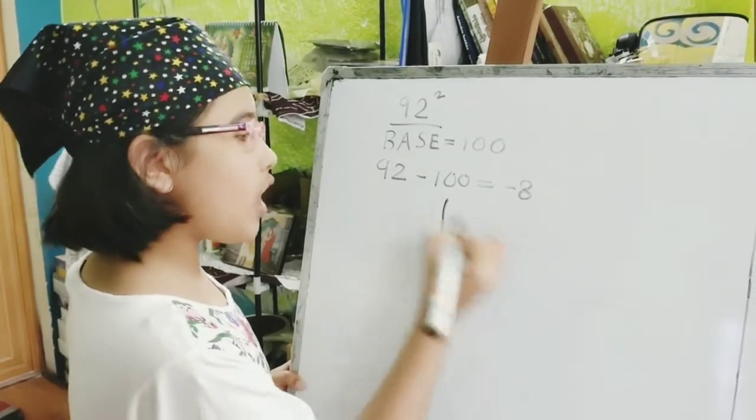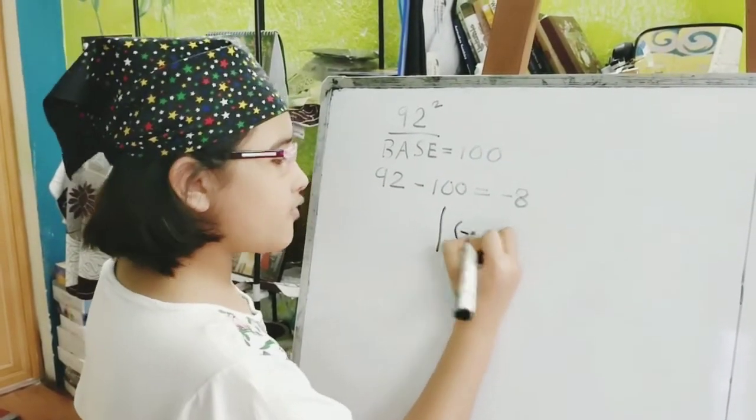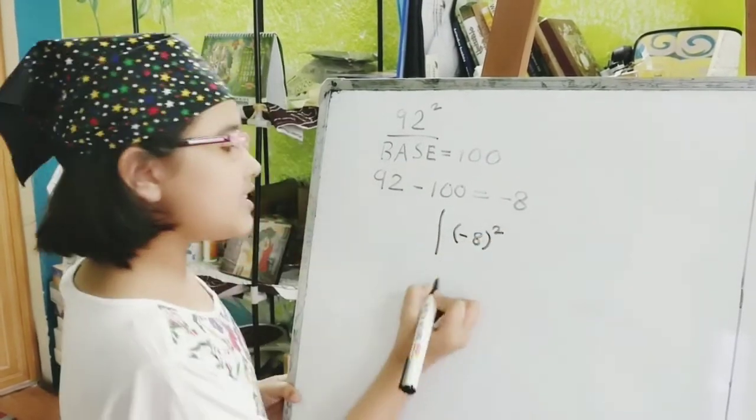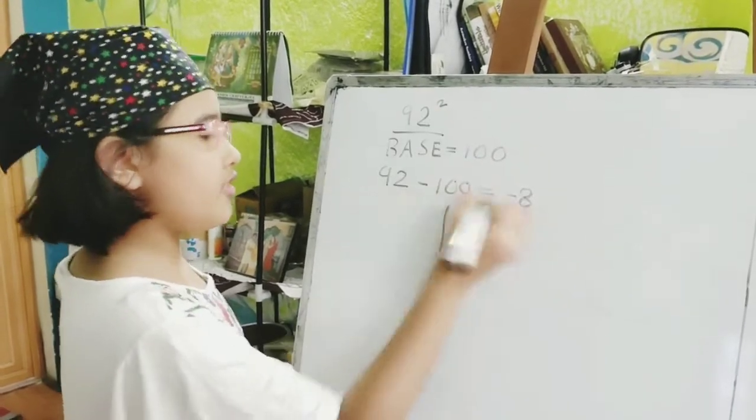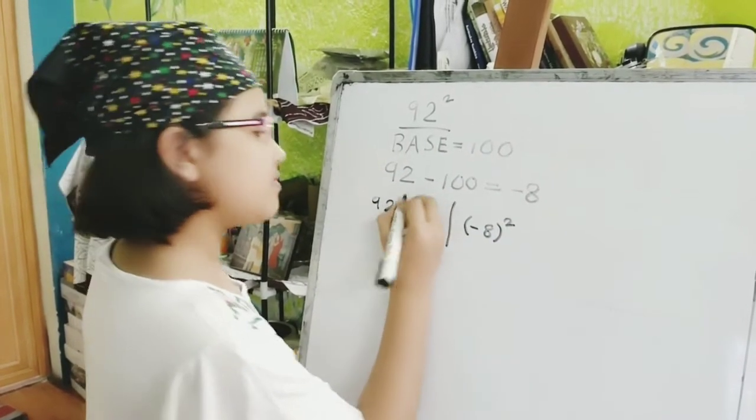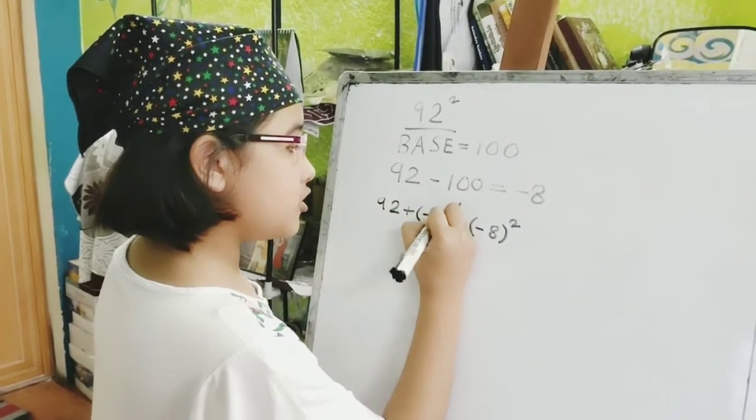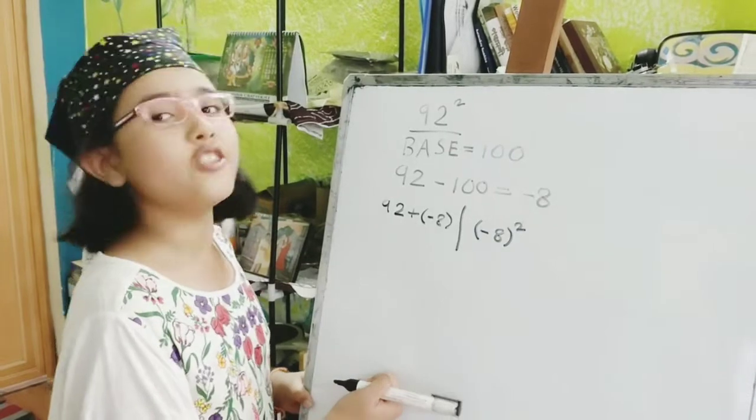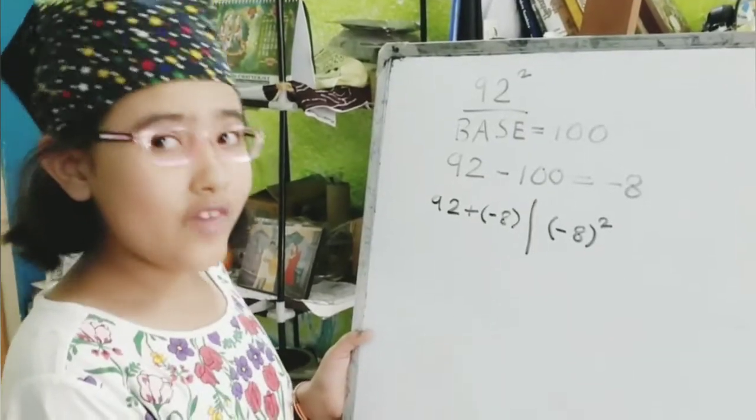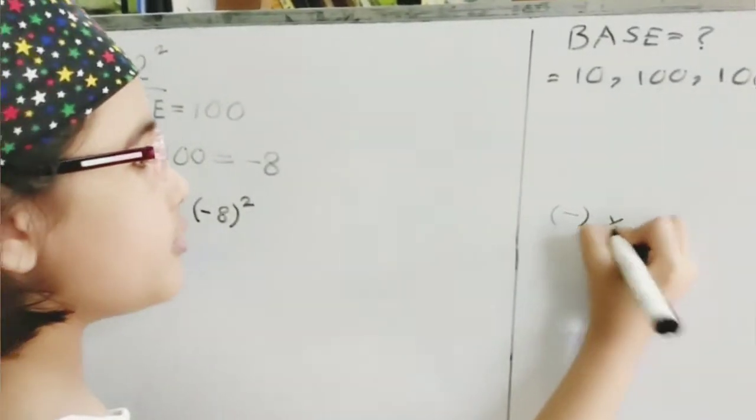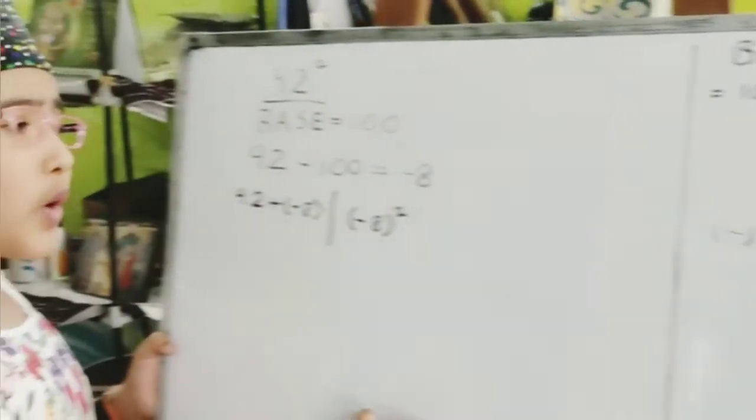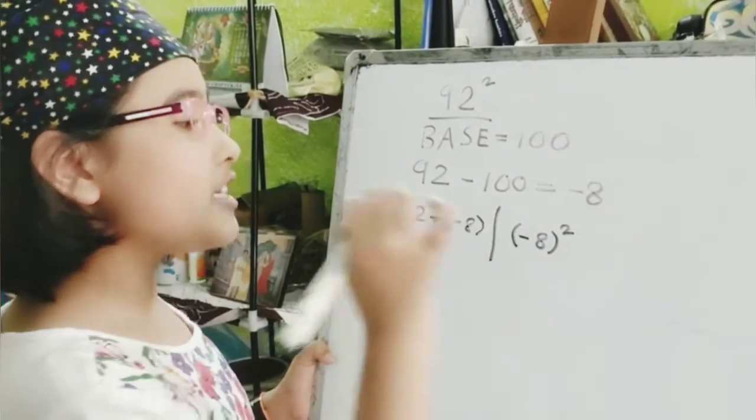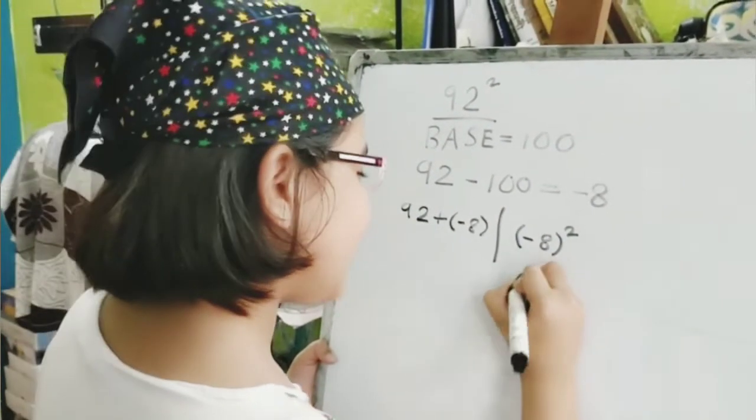Now, the next part, we'll divide into 2. In the right side of the line, we'll do the square of the difference. And, on the left side of the line, we have to add the number and the difference. Remember, don't forget to give these brackets. Those are very important. We know very well that minus into minus is equal to plus. So, we just need to do 8 squared. That is 64.